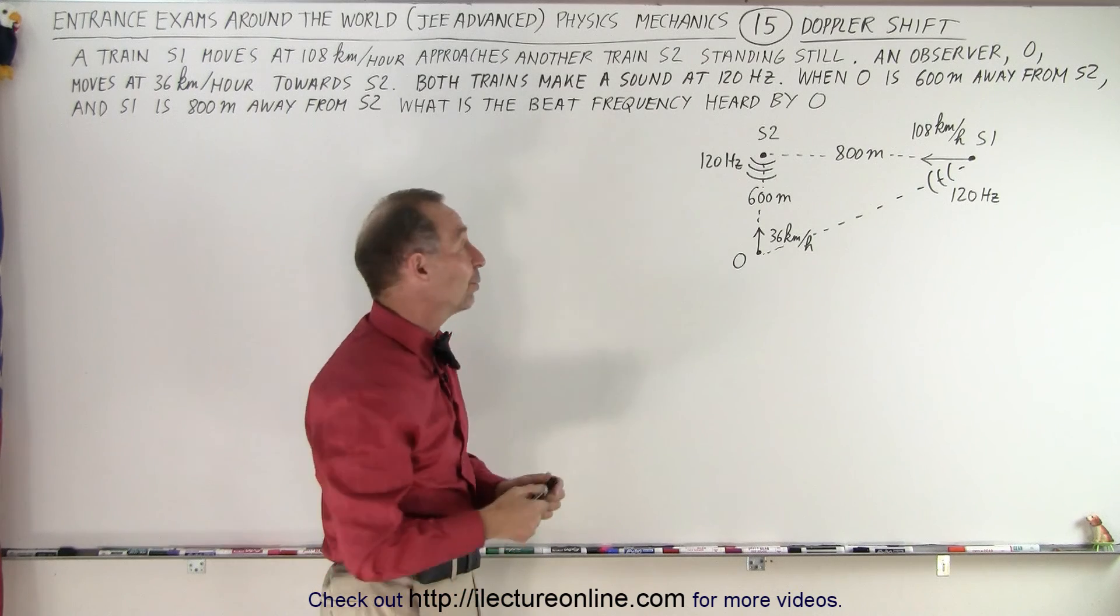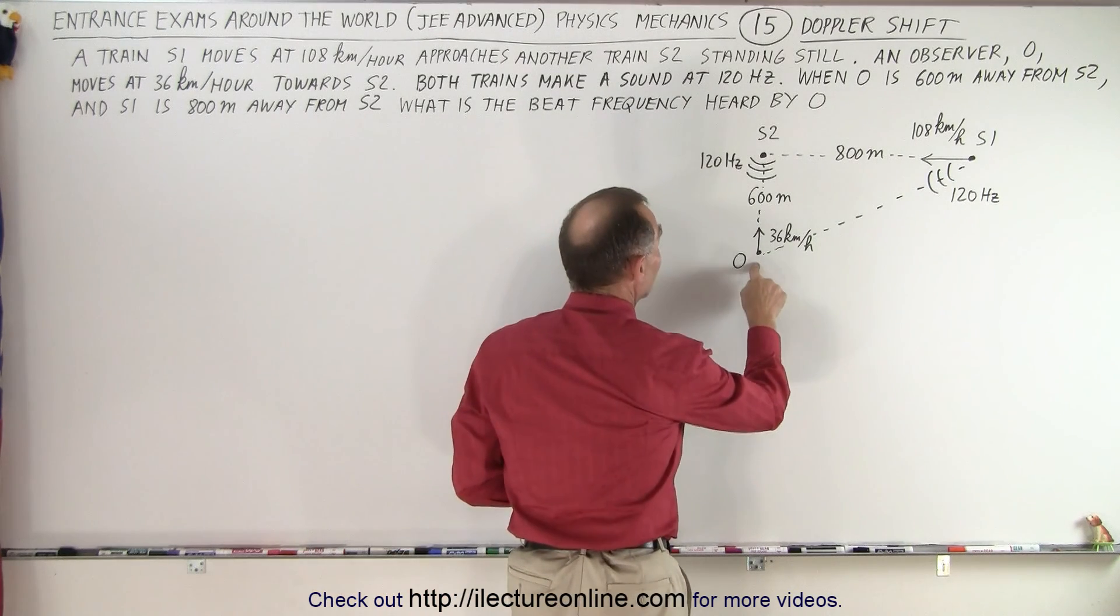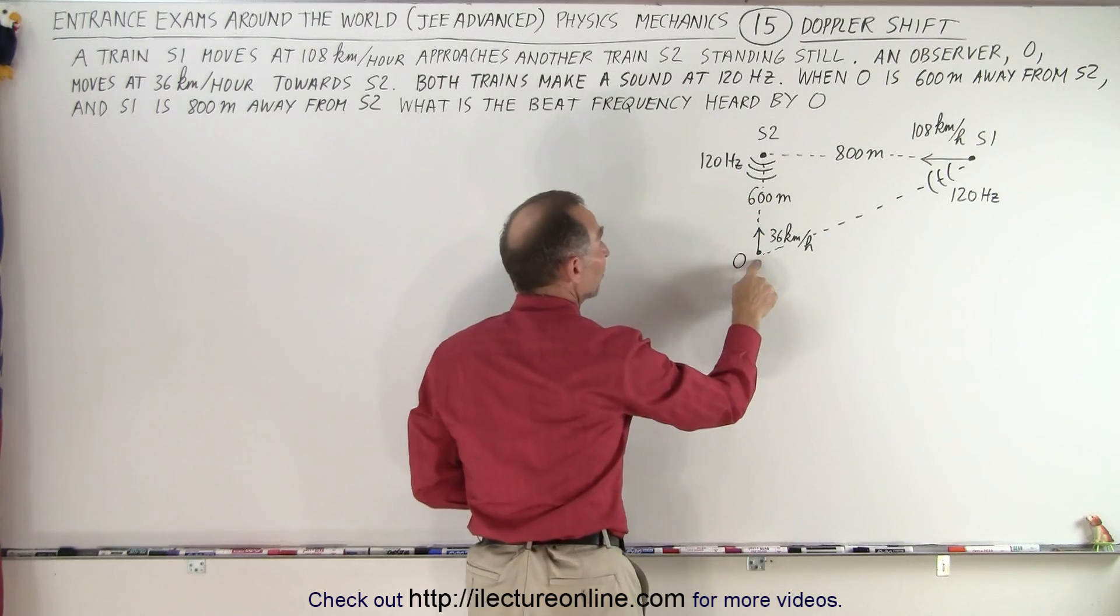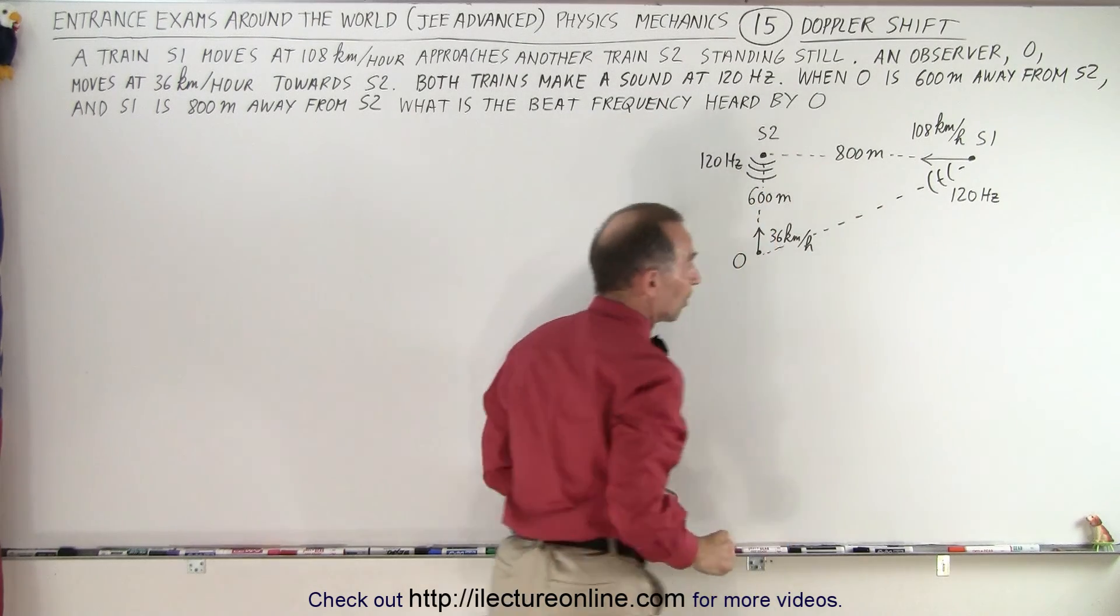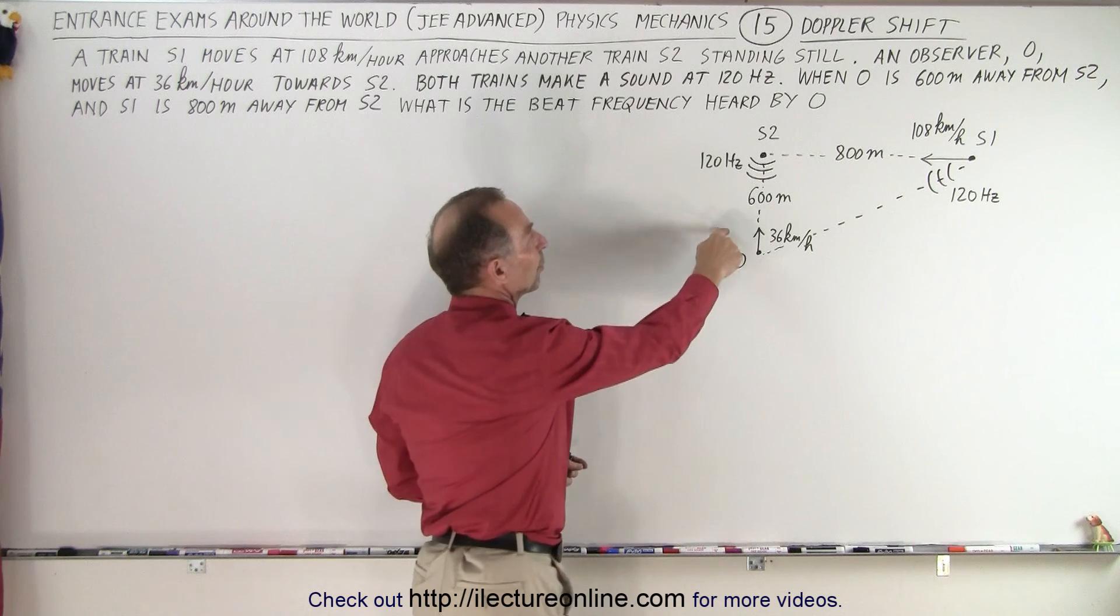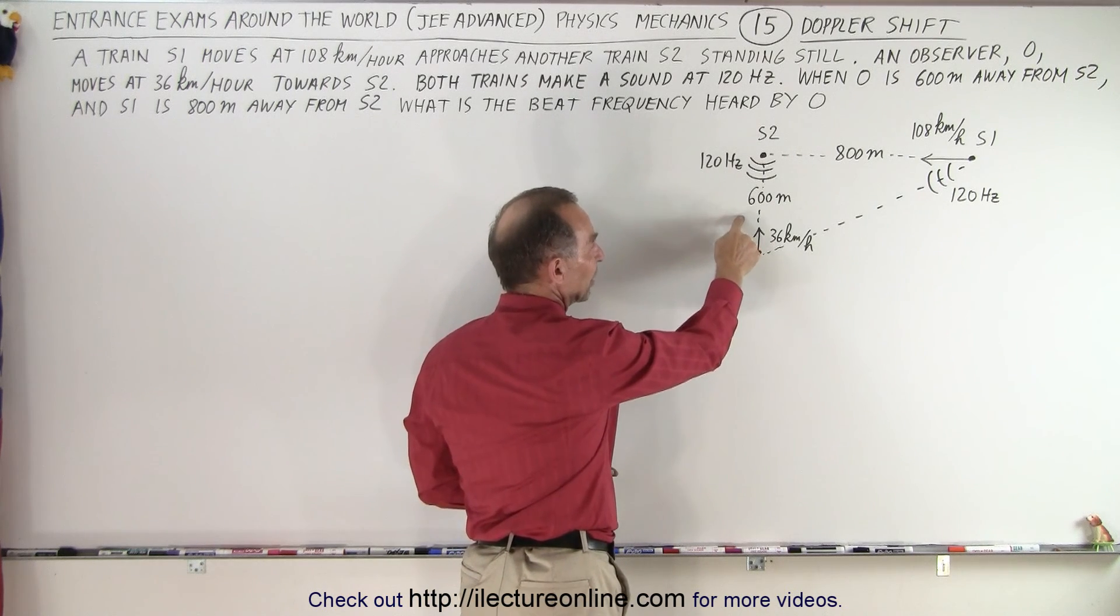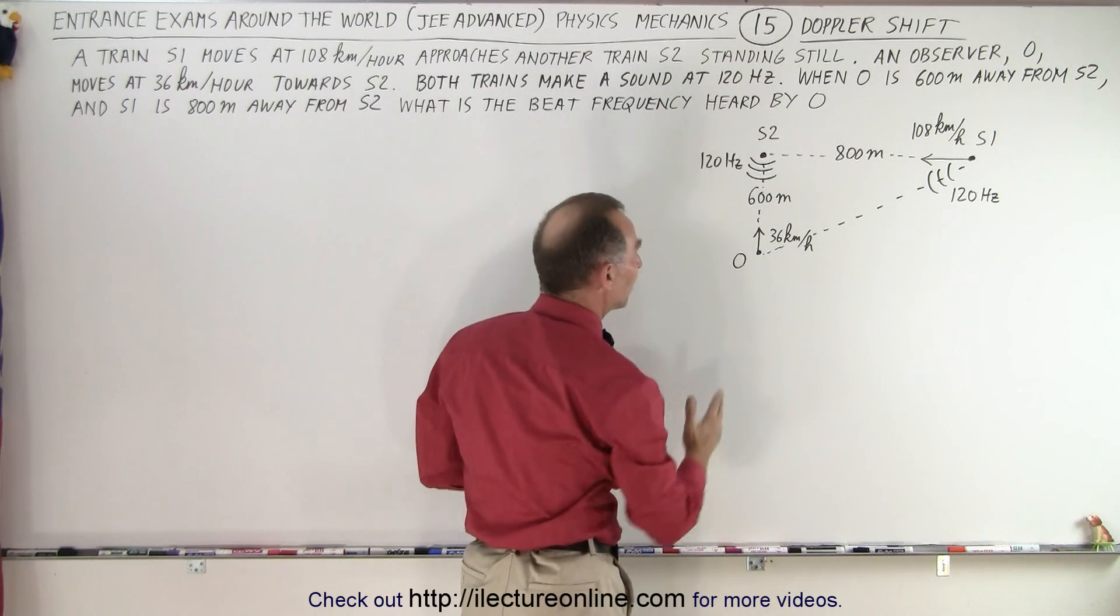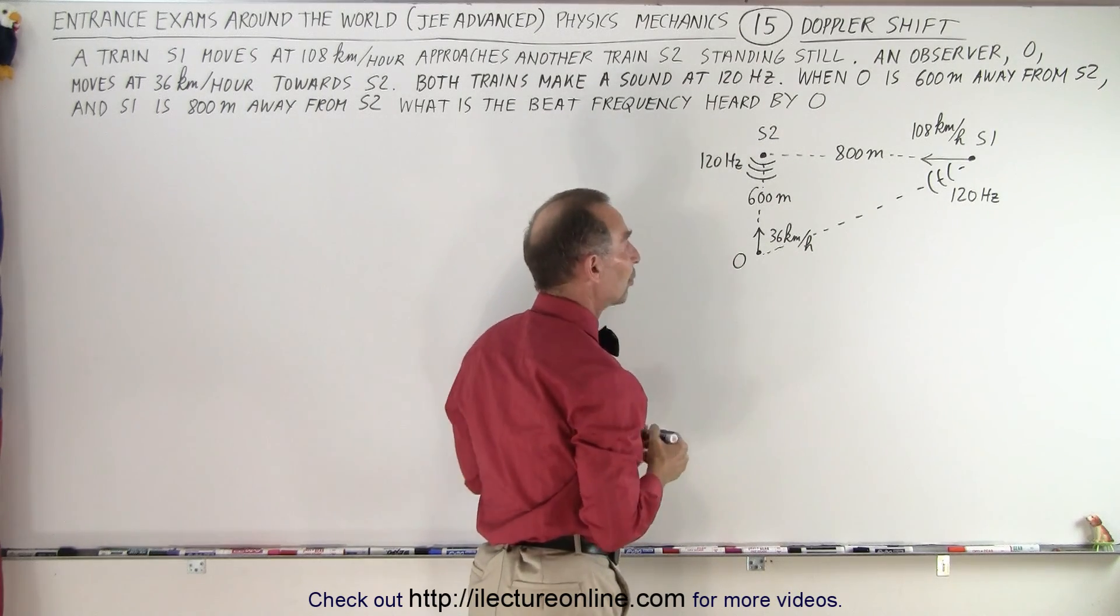So essentially what we need to do is we need to figure out the frequency observed from listening to this train and the frequency observed by listening to this train. Let's take the easy one first, let's see what the frequency is observed by the observer due to the speed at which the observer reaches that train.